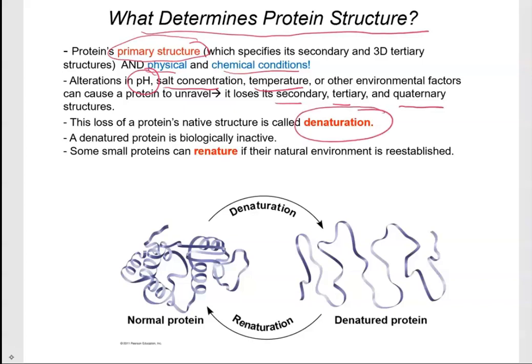When a protein loses its shape, we say it has been denatured. Imagine taking a raw egg and boiling it — you increase the temperature, cook the egg, and it looks very different from the original. The raw egg is slimy and gooey, but cooked it is very solid and white. The protein structure has been affected, so we say the protein has been denatured. Most of the time denaturation is permanent, but there are cases where you can re-nature the protein by restoring the original conditions.